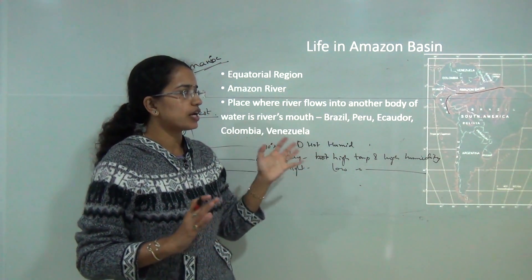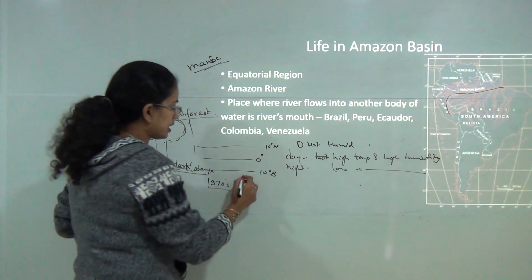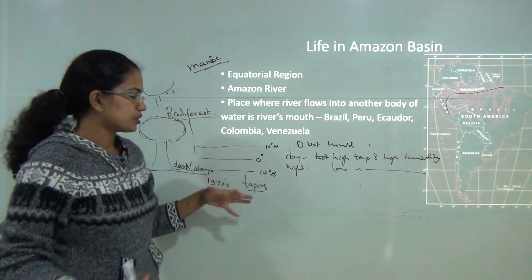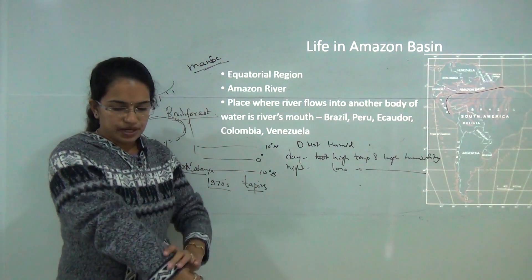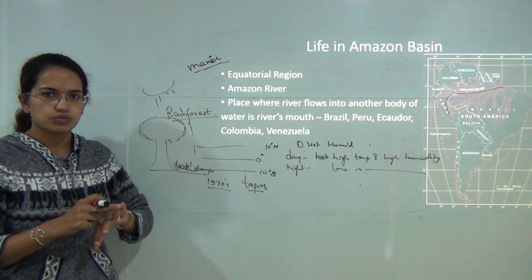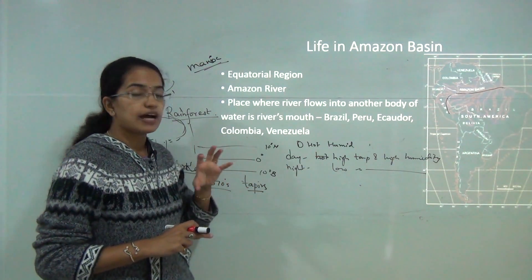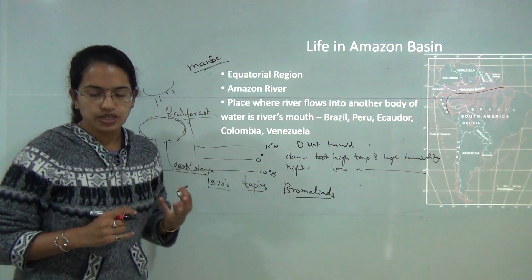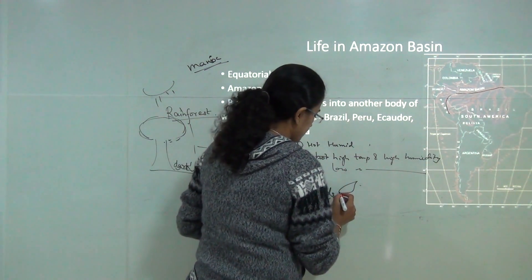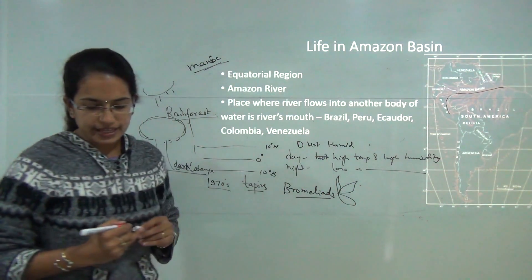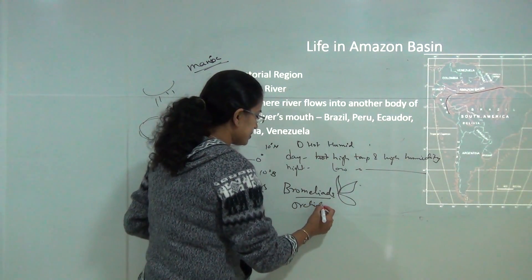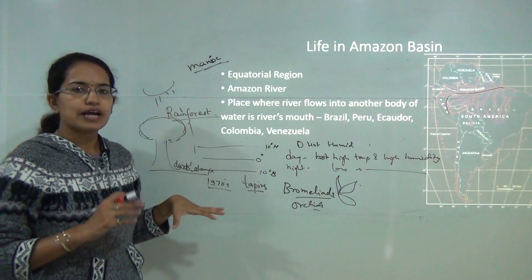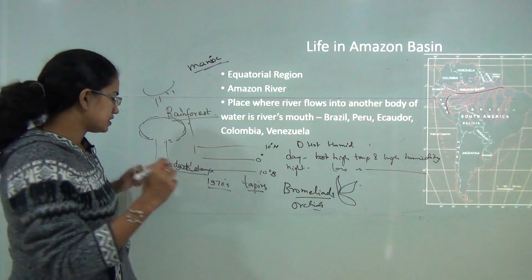The major fauna of the Amazon basin includes monkeys, sloths and tapirs, along with crocodiles, pythons and anacondas. Among the birds you have pheasants and macaws. There are also plant parasites such as bromeliads — a unique parasite that stores water in its leaves — and orchids, which are also seen in the Amazon basin.